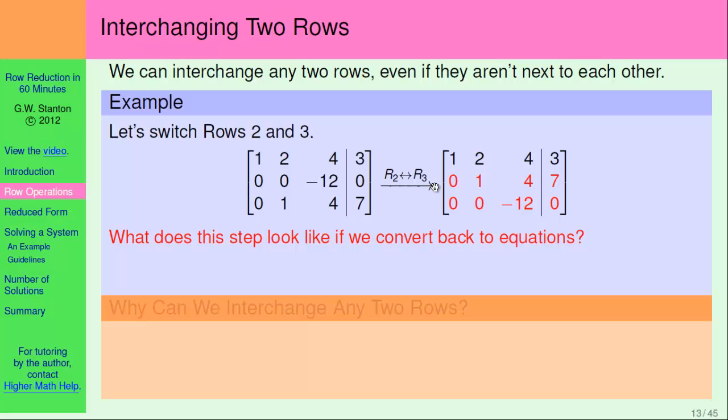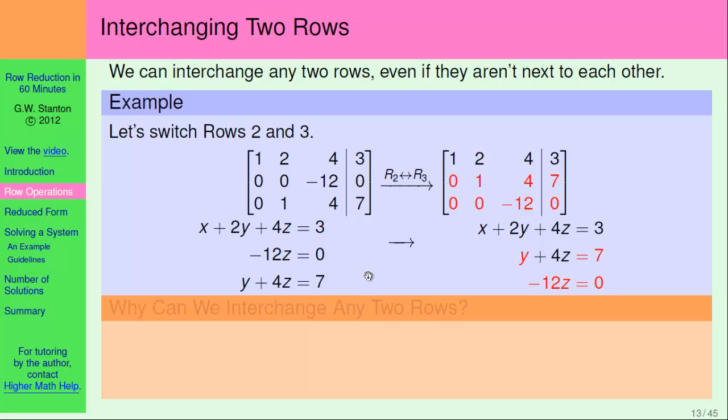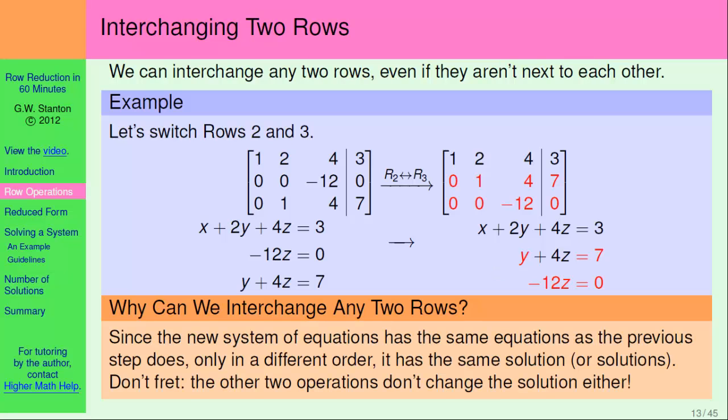Well, what does this step look like if we convert back to equations? Well, it just gives us the same exact system of equations, but the second and third equations are listed in a different order, which doesn't affect the solution to the system. So, it's okay to do that if we would like. So, maybe later on that could be useful. Okay. So, this operation doesn't change the set of solutions. The other ones don't either. And that's why if we apply this sequence of operations, then at the end, we get a new system of equations that has the same set of solutions as the original system.